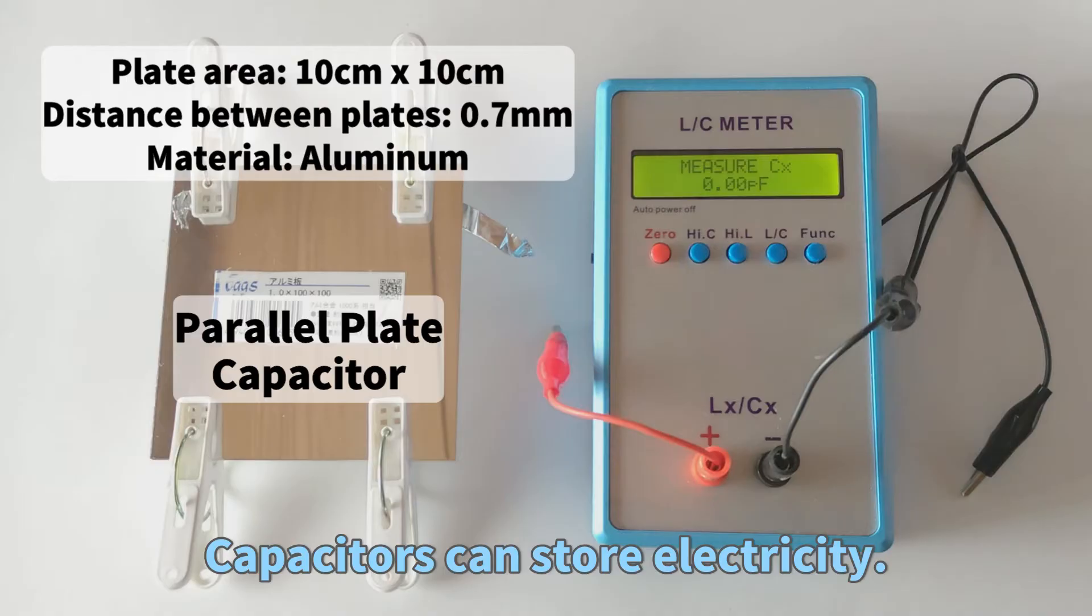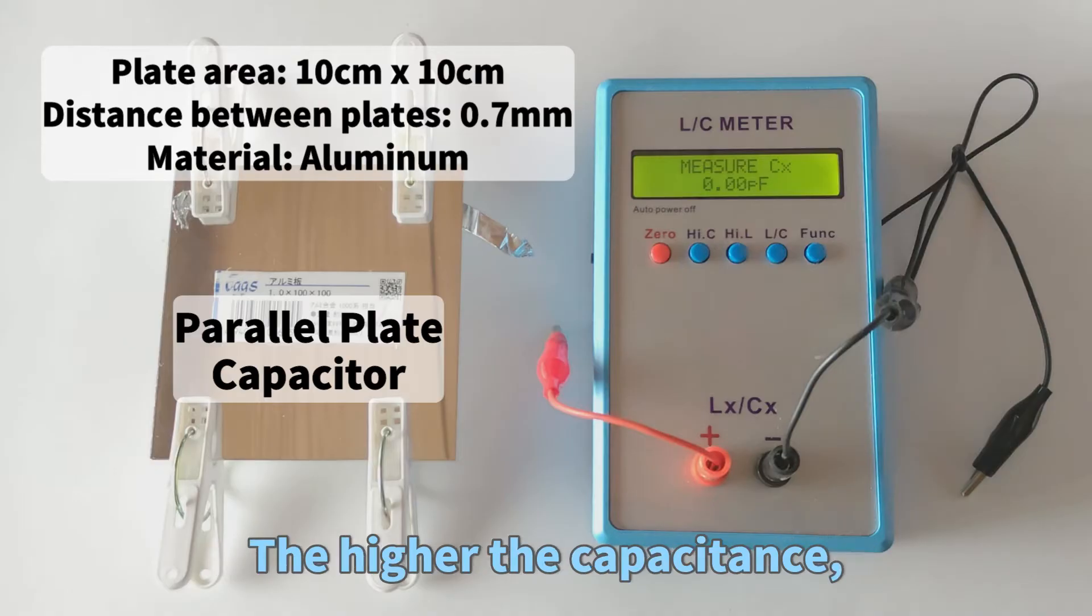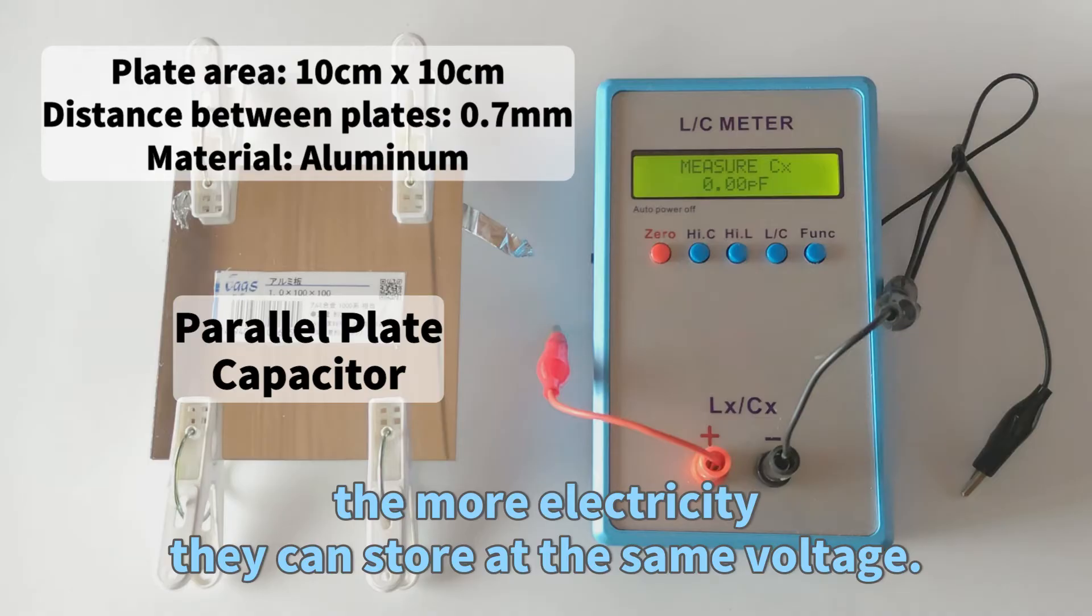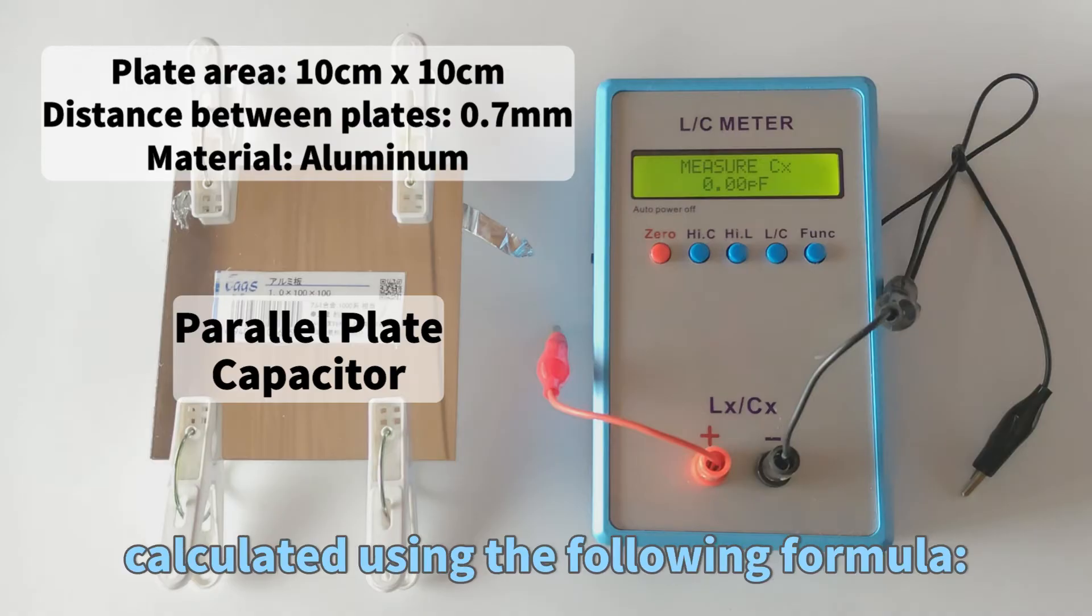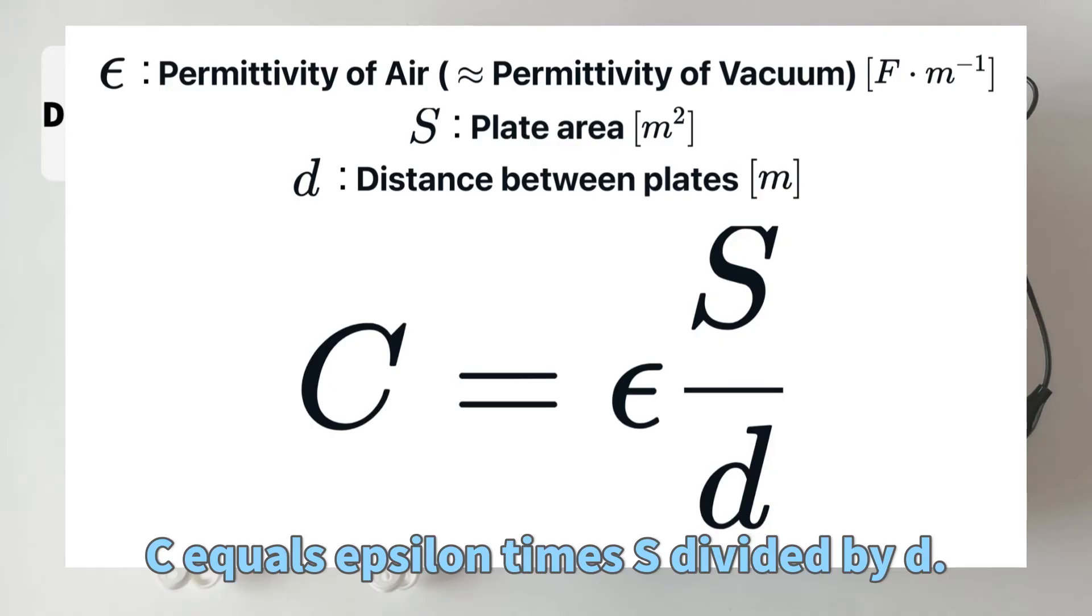Capacitors can store electricity. The higher the capacitance, the more electricity they can store at the same voltage. For a parallel plate capacitor, the capacitance can be approximately calculated using the following formula: C = ε × S / d.